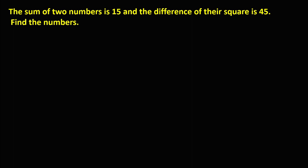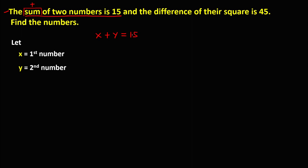First, we need to assign a variable for every number. We let x be the first number and y the second number. Then we create an equation from this given. For the statement that the sum of two numbers is 15, this is addition, so the equation is x plus y equals 15.